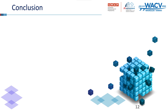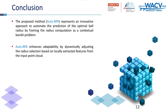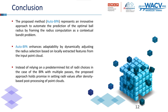In conclusion, the Auto-BPA method introduces an innovative approach to automating the prediction of the optimal ball radius. By framing the radius computation as a contextual bandit problem, it enhances adaptability through dynamic adjustments based on locally extracted features from input point clouds. Unlike traditional methods which predetermine radius choices, Auto-BPA can practically set radius values after density-based processing, offering a more flexible and effective solution for point cloud analysis.